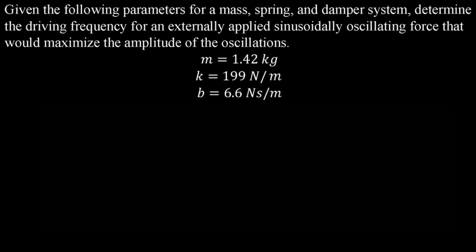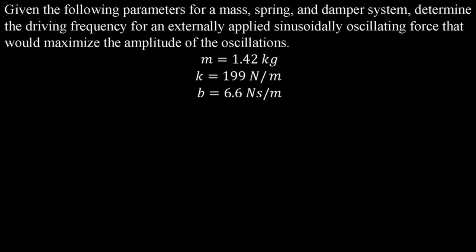Now let's take a look at a practice problem. Given the following parameters for a mass, spring, and damper system, determine the driving frequency for an externally applied sinusoidally oscillating force that would maximize the amplitude of the oscillations. They give us the value for the mass, the value for our spring constant, and then the value for b — related to our damper — which is 6.6 newton seconds per meter.